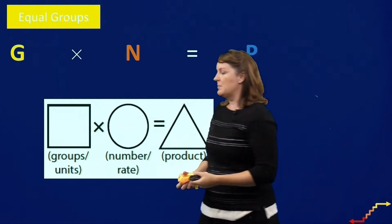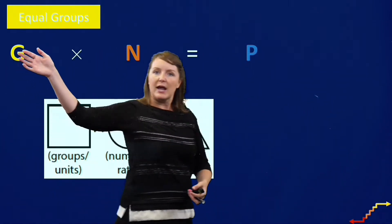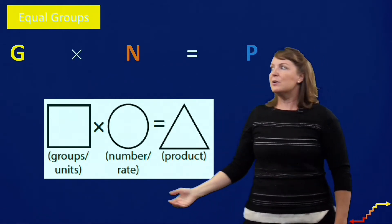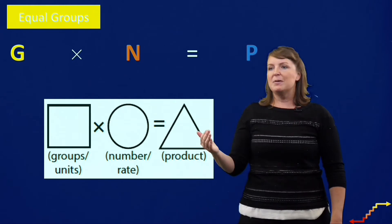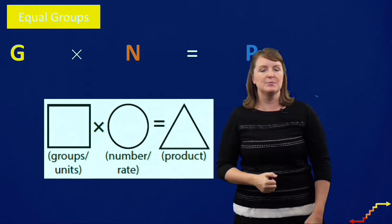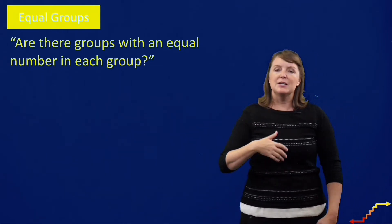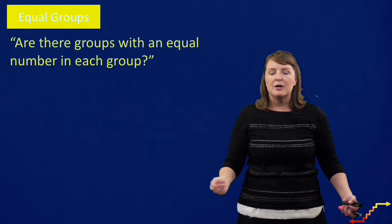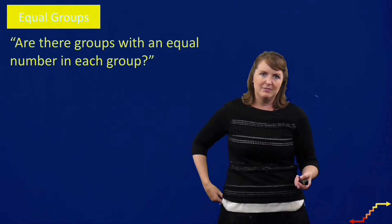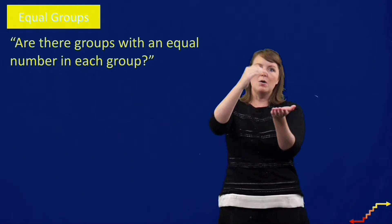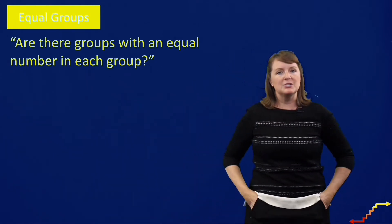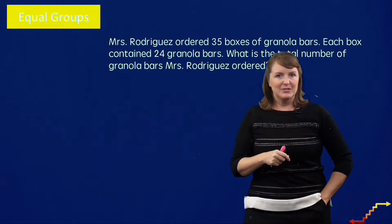Once we realize a problem is an equal groups story, it's really helpful to use an equation like this: groups times the number in each group equals the product. You could also use a graphic organizer — students really benefit from having some type of structure for setting up the word problem. A helpful prompt is: are there groups with an equal number in each group? I like to dip my hand into separate groups to show equal number in each.